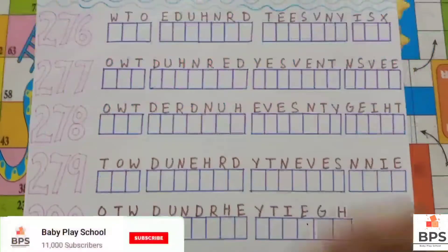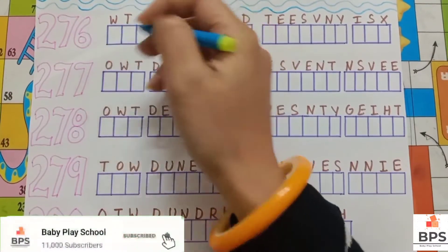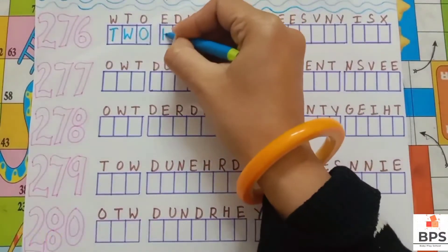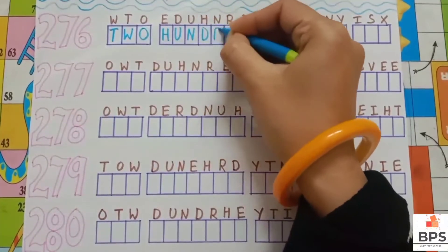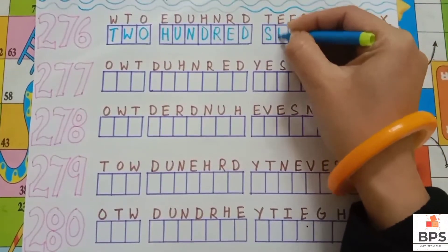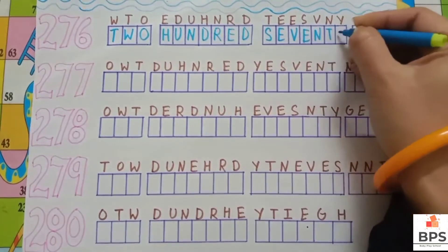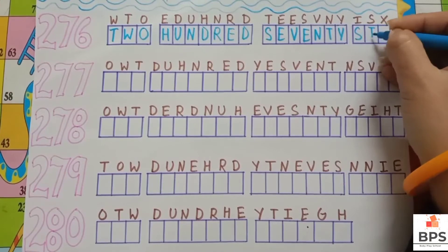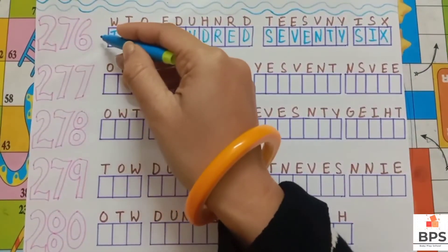276: T, W, O, 2, H, U, N, D, R, E, D, 100, S, E, V, E, N, T, Y, 70, S, I, X, 6. 276.